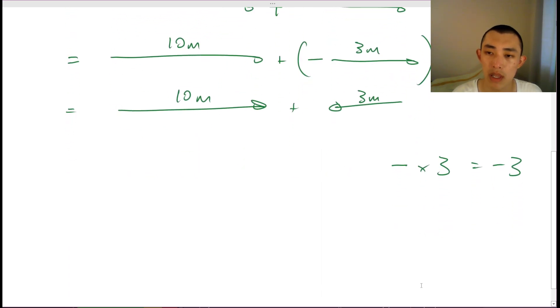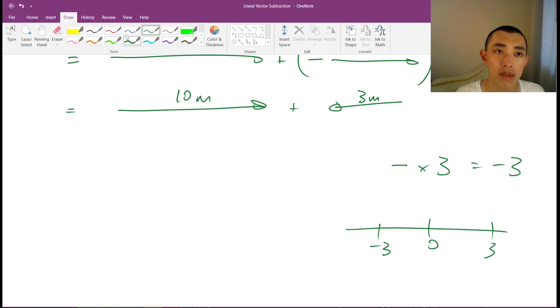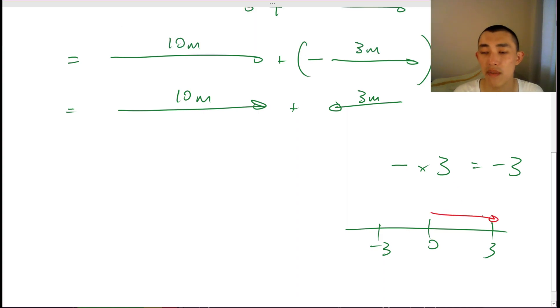So if you imagine that on a number line, here we have 0, 3, minus 3. In fact, numbers themselves can be represented as vectors. We used to have a vector pointing towards the right. When you multiply 3 by a negative sign, we suddenly flip it towards the left. So multiplying by a negative sign will flip the direction of the vector completely.